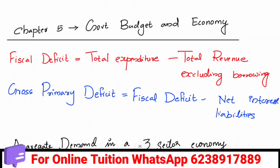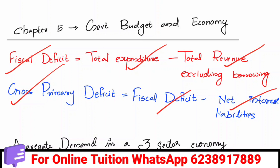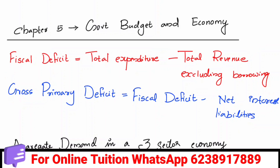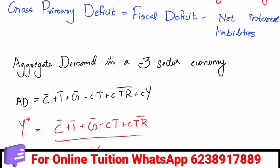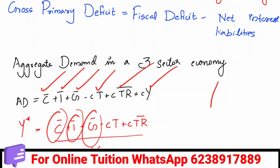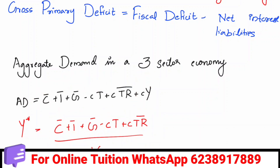In government budget and economy: fiscal deficit is total expenditure minus total revenue excluding borrowing. Gross primary deficit is fiscal deficit minus net interest liabilities. The equilibrium with government is C̄ + Ī + Ḡ + C·TR̄ + cY, with autonomous components divided by (1 − c).